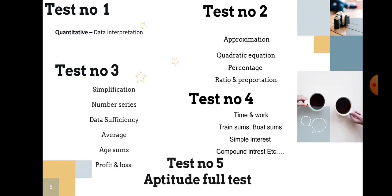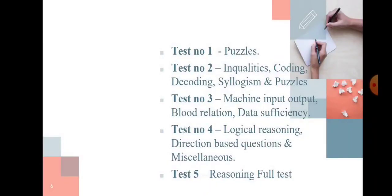Test number five: aptitude full test. Totally you're going to write five tests for aptitude alone. Then for reasoning - test number one: puzzles, 100 questions. Test number two: inequalities, coding, decoding, syllogism and puzzles - 100 questions.